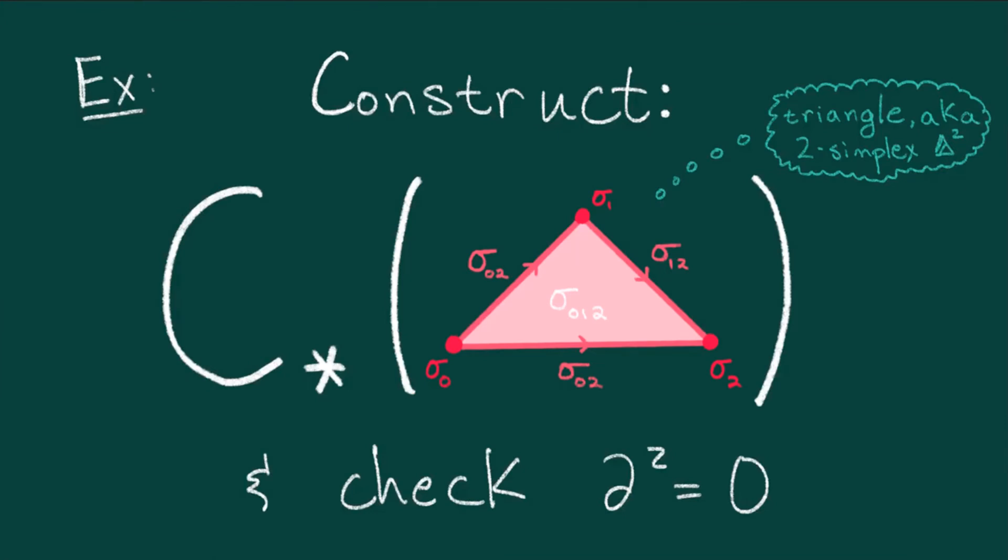As a next example, try your best to construct a reasonable model for chains on a two-simplex, aka a triangle, using the following orientation and nomenclature. Check that the master equation holds. Finally, think over the relationship between the indices of the faces, edges, and vertices, and the coefficients of the boundary operator. Hint, they will be either 1 or minus 1, which is minus 1 raised to an even or an odd power.